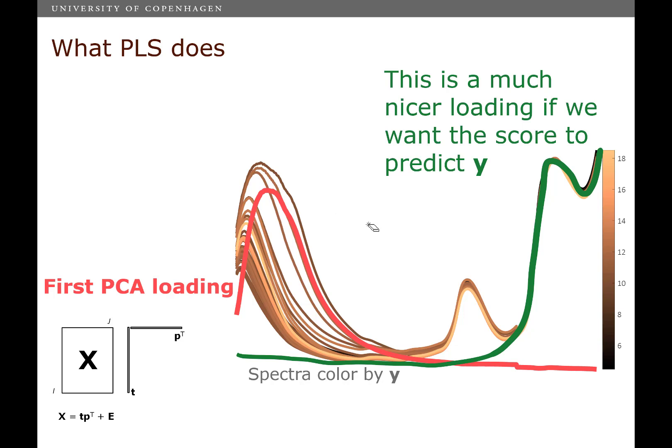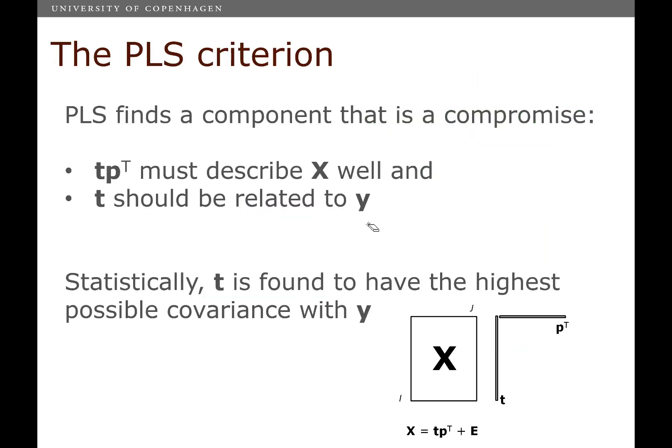we would like to do something that looks for the relevant information instead of just looking for the big information. So we would like to have a loading vector sort of something like this, which finds the relevant information. And to some extent, that's exactly what PLS does. PLS does not look for a component that describes as much variation in X as possible,